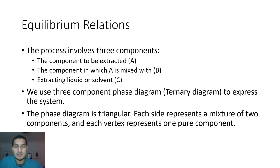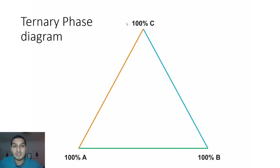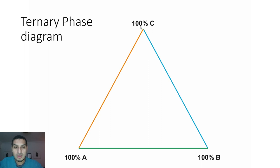The phase diagram is triangular. Each corner represents a pure component — this corner is pure C, this is pure A, and this is pure B, so it's 100% B, 100% A, 100% C. Each side of the triangle represents a binary system. Here it is a mixture of A and C, here a mixture of B and C, and this side a mixture of A and B.